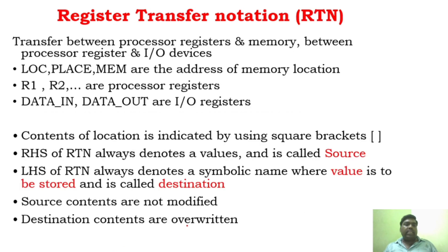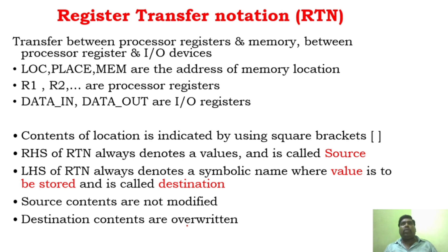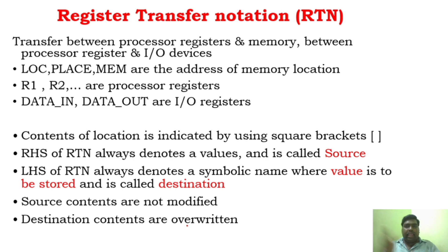We will see what are the different types of instructions. But before that, there are two important notations that you have to concentrate on: Register Transfer Notation and Assembly Language Notation — RTN and ALN. RTN is Register Transfer Notation and ALN is Assembly Language Notation.